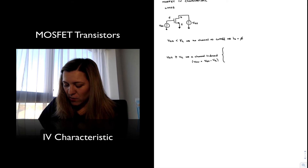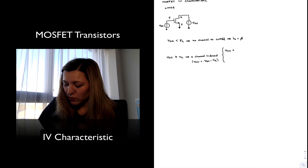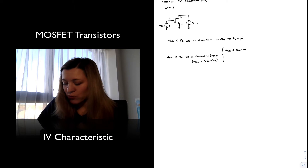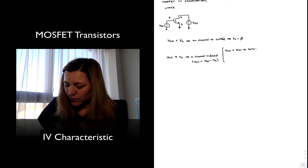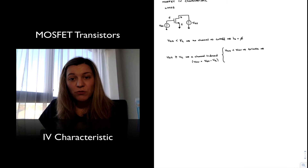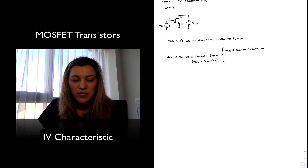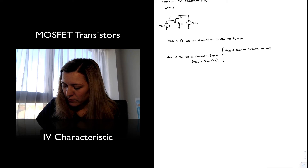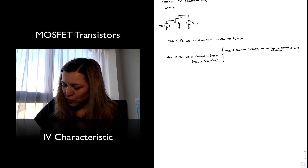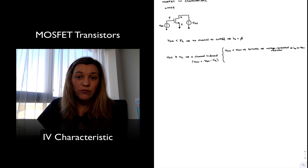Different things can happen depending on the value of VDS. We have seen that when there is a channel induced, as long as VDS remains less than the overdrive voltage, the transistor is in its triode region. In the triode region, the transistor behaves as a voltage-controlled resistor with resistance controlled by VGS, and ID is proportional to the overdrive voltage VGS.